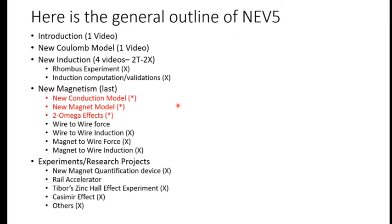Here's a general outline of where we're going with new electromagnetism V5. Next week I'm going to produce the introduction video, taking a lot from the trailer video I'll show next. I've decided that usually I like to release the paper first and have it copyrighted before I produce any videos. But most of the stuff in NEV5 has already been released in one form or another — the only proprietary things I haven't released are the two omega effects, the new conduction model, and the new magnet model. So I may start producing videos for the parts we already have, produce a small paper just on those new items, get that copyrighted, and then produce the videos.